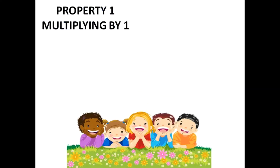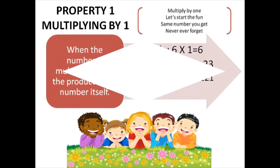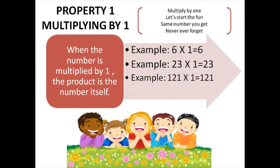Property number one: multiplying by one. Let's read these lines — multiply by one, let's start the fun, same number you get, never ever forget. This means when a number is multiplied by one, the product is the number itself.